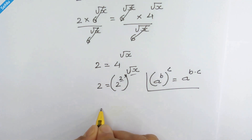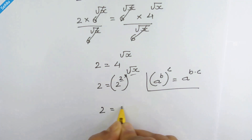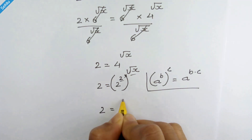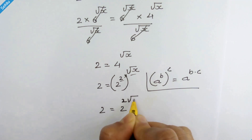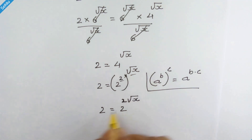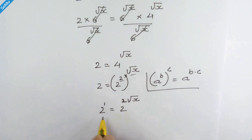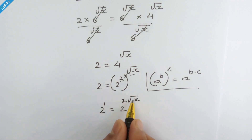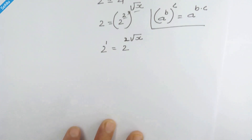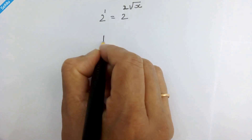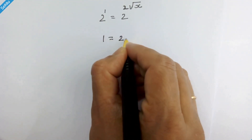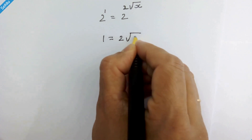So it will be 2 is equal to 2 raised to 2 times square root of x. Here 1 is the default exponent, and since we have the same base on both sides, we can equate the exponents.